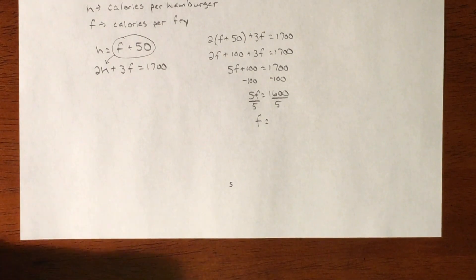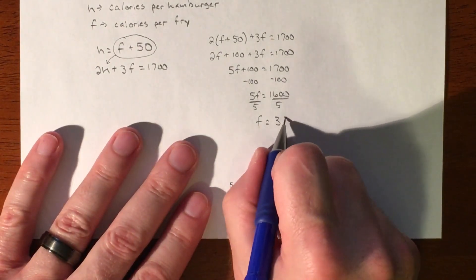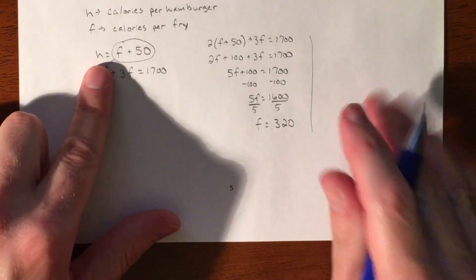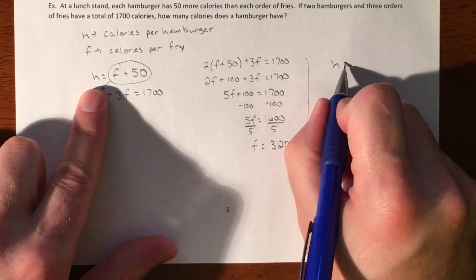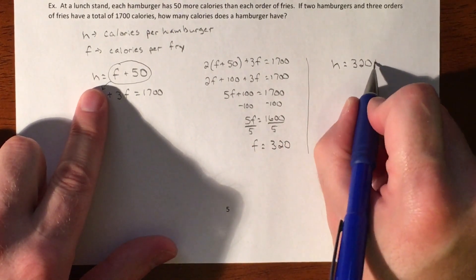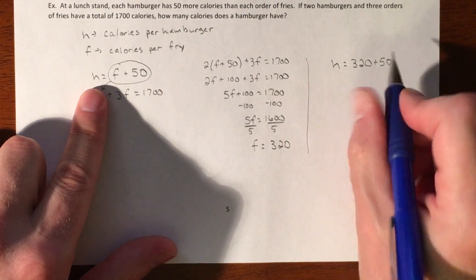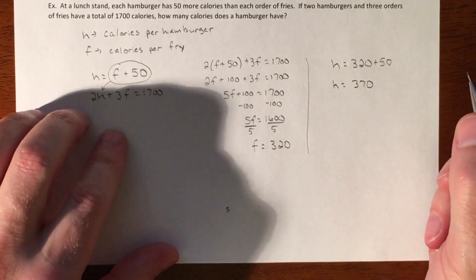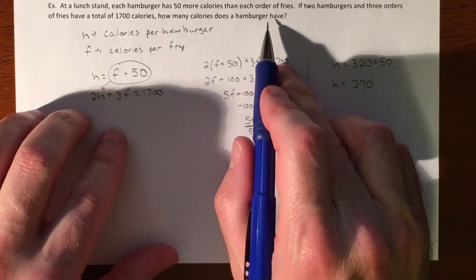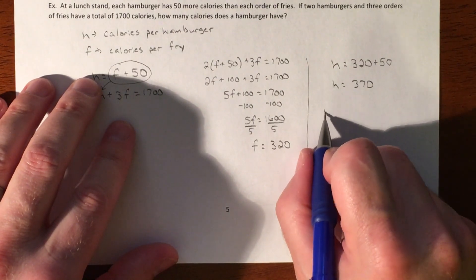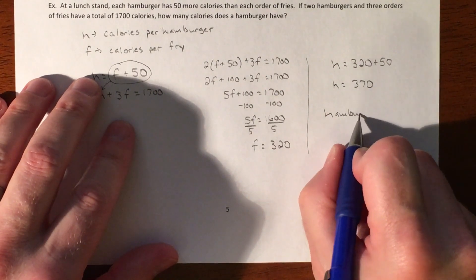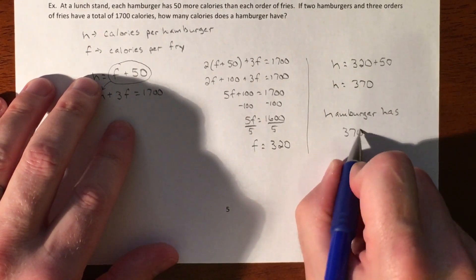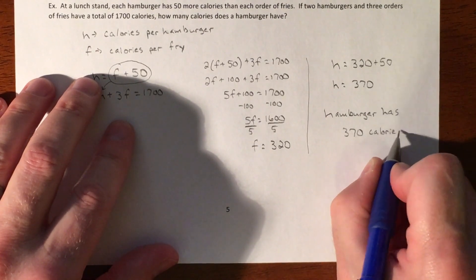And then we'll take that value and plug it right back into this one where our hamburger is 50 more calories than our french fries. So our hamburger is going to be 370 calories. The question is how many calories does a hamburger have? So a hamburger has 370 calories.